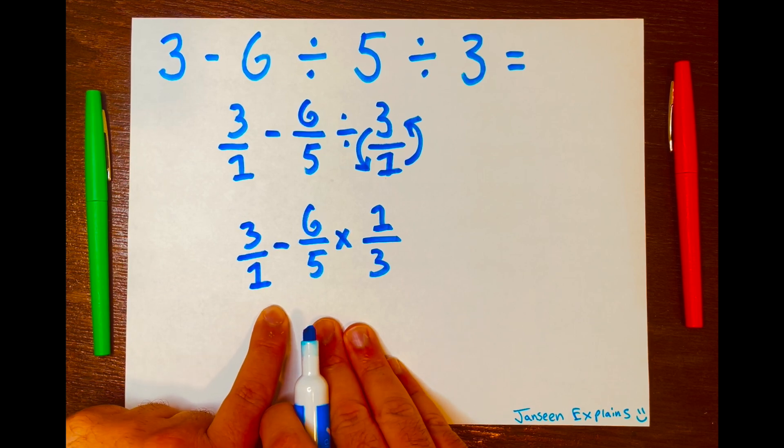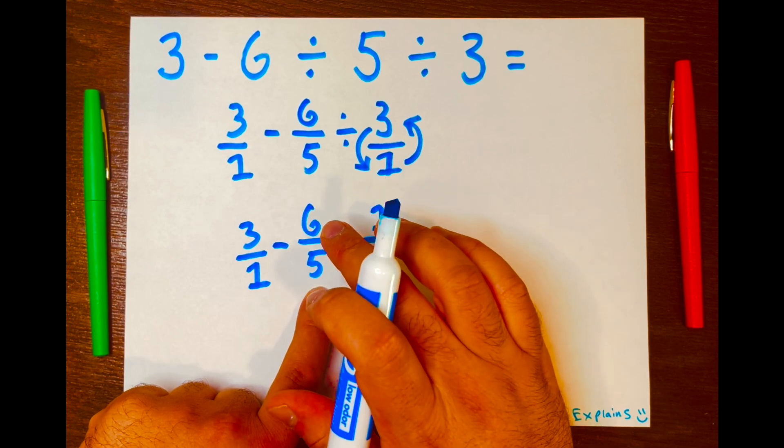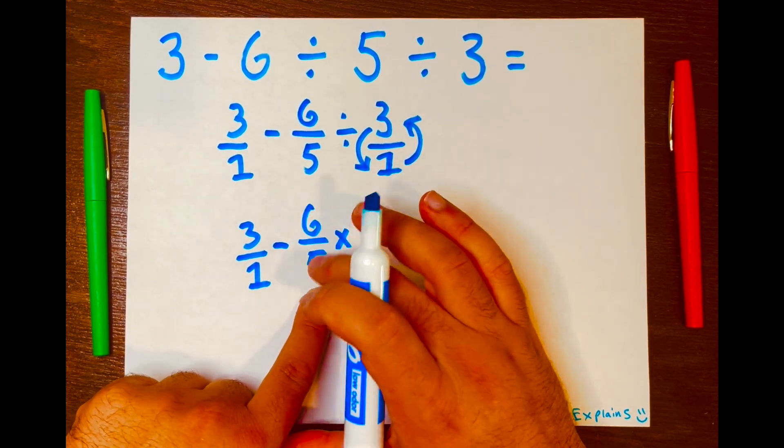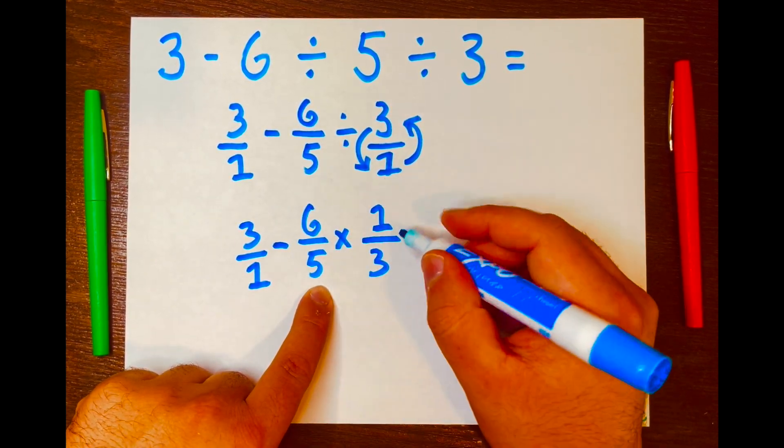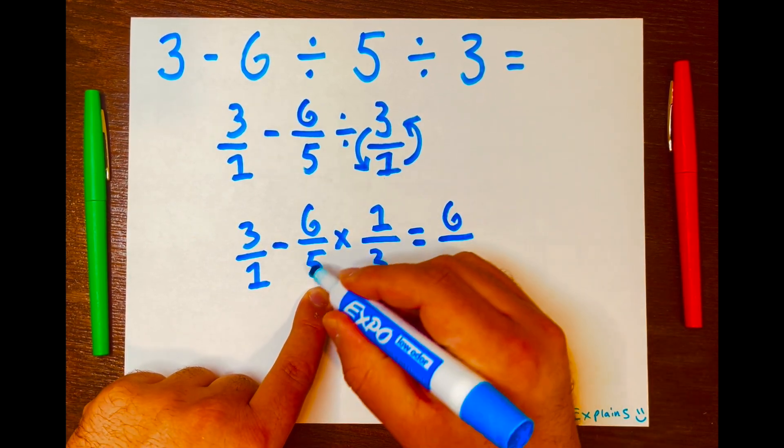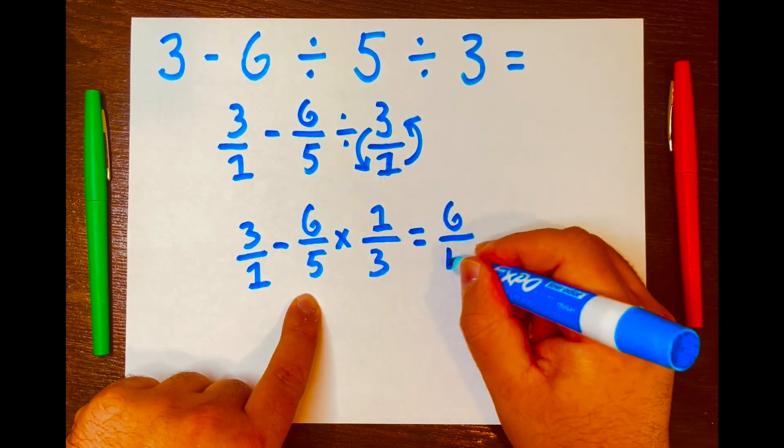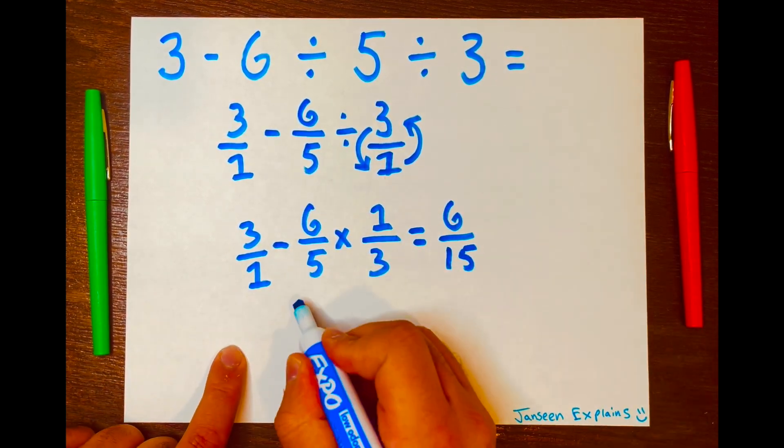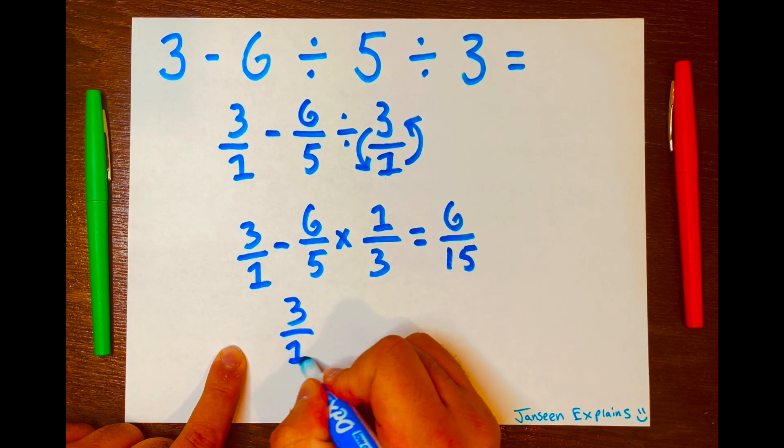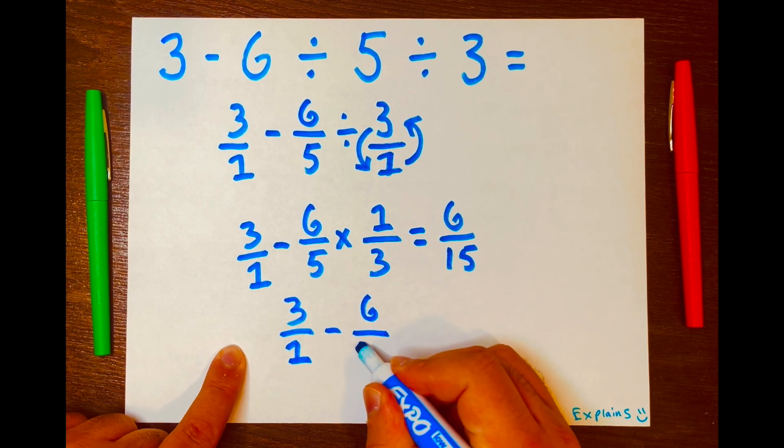Now again, left to right, we start with multiplying 6 over 5 times 1 over 3. So we just multiply across, it gives you 6. 6 times 1 is 6, 5 times 3 is 15. And now we have 3 over 1 minus 6 over 15.